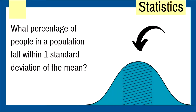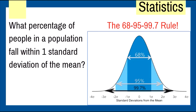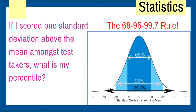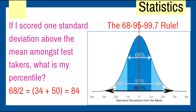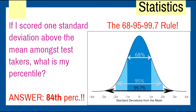What percentage of people fall within one standard deviation of the mean? Use the 68-95-99.7 rule — memorize it. 68% fall within one standard deviation. If I scored one standard deviation above the mean, what is my percentile? Take 68 divided by 2 equals 34, then 34 plus 50 gives 84. Everything to the left of the mean is 50%, so the answer is the 84th percentile.